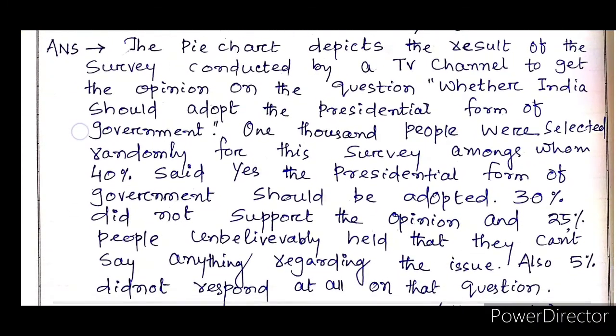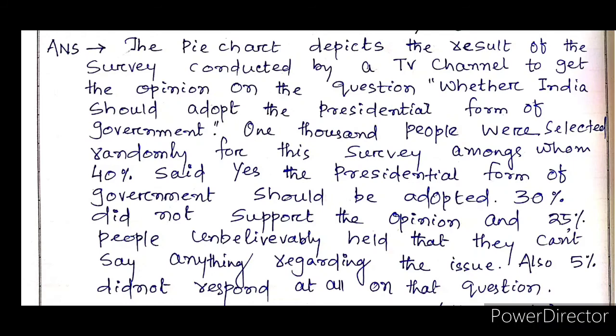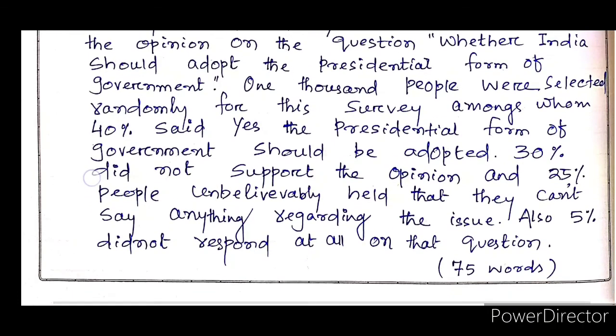The pie chart depicts the result of a survey conducted by a TV channel to get the opinion on the question whether India should adopt the presidential form of government. 1000 people were selected randomly for the survey, amongst whom 40% said yes, the presidential form of government should be adopted. 30% did not support the opinion, and 25% people unbelievably held that they can't say anything regarding the issue. Also, 5% did not respond at all to the question.